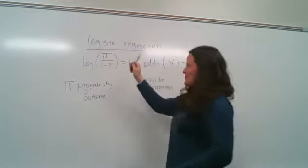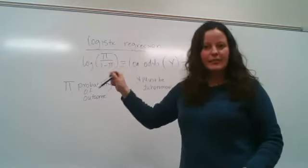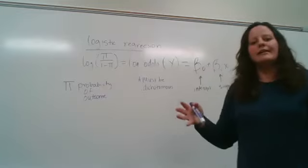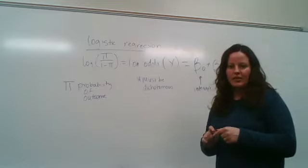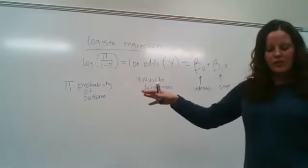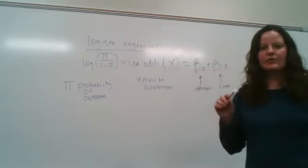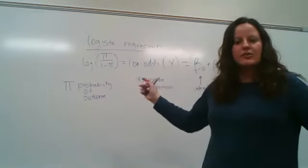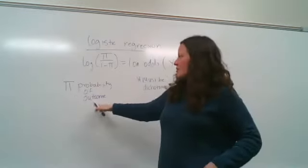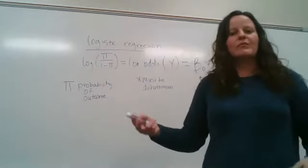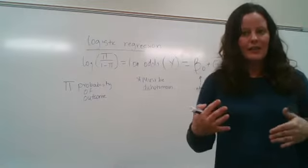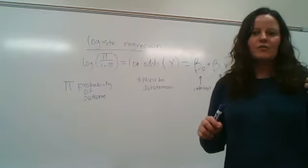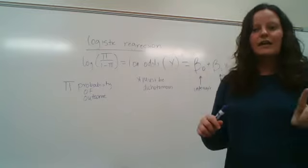As a reminder, in the logistic regression model we're estimating the log odds of having the outcome, using the same sort of linear equation from linear regression. For logistic regression we have a categorical outcome — specifically a dichotomous or binary outcome, a yes/no variable. Pi represents the probability of the outcome, essentially the probability of success, meaning having the outcome.